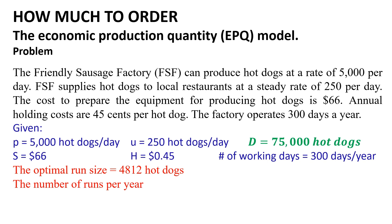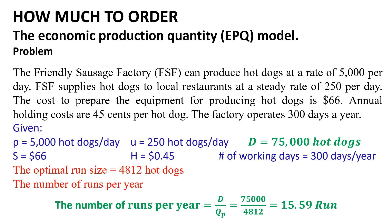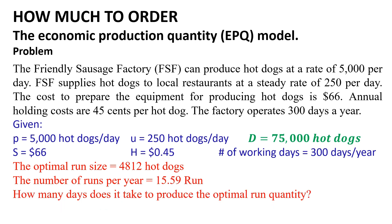The second question is to find the number of runs per year. This can be calculated by dividing the annual demand D by the optimal run size QP. So, the number of runs per year equals 75,000 divided by 4,812, which equals approximately 15.59 runs.